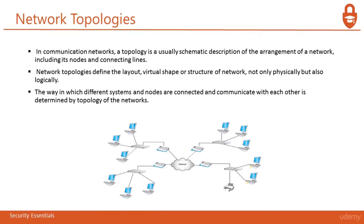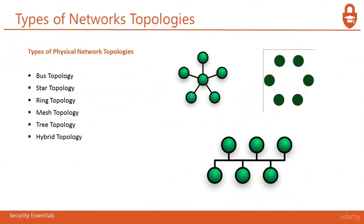Going over network topologies — a topology is usually a schematic description of the arrangement of a network, including its nodes and connecting lines. Network topologies define the layout of the virtual structure of a network, not only physically but also logically. The way in which different systems and nodes are connected and communicate with each other is determined by the topology of the network. Topology will explain how devices are connected to a network — maybe it's a ring topology, a tree topology, a star, or a bus.